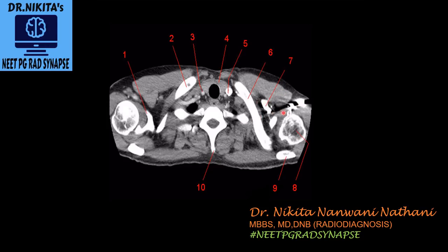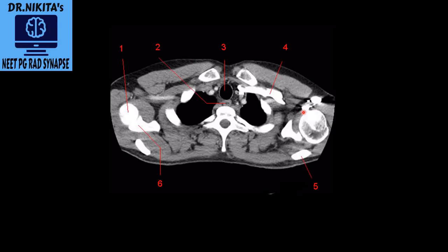Structure seven is the subclavian vein. The white artifact visible here is because contrast was injected into the patient's left upper limb, causing this artifact. Moving to the next lower slide: again we see the trachea as a black air-containing structure. Structure two, the round structure just posterior to the trachea, is the esophagus. The subclavian vein into which contrast was injected appears white. The humerus and scapula are also visible posteriorly.